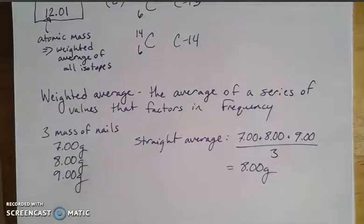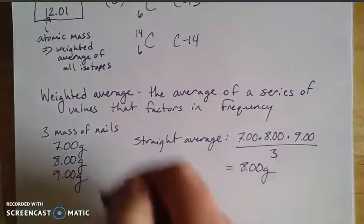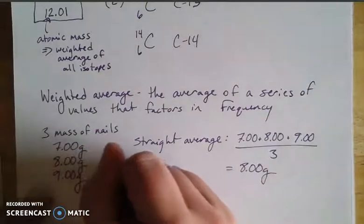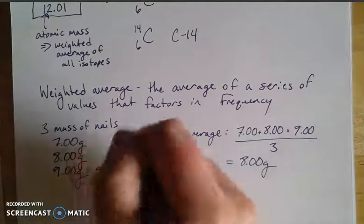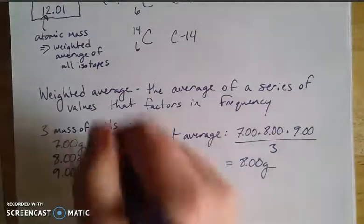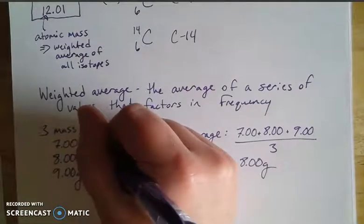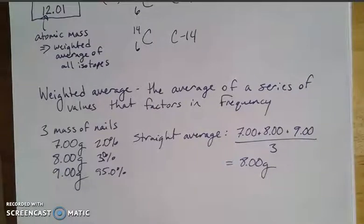Being a scientist, I counted how often I saw 7 grams versus 8 grams versus 9 grams. I found that 95% of the time the nails were 9 grams, 3% of the time they were 8 grams, and 2% of the time they were 7 grams.